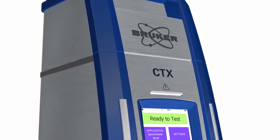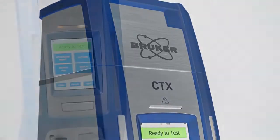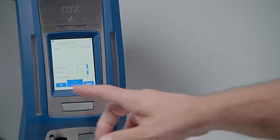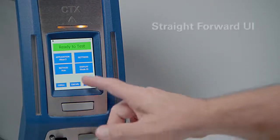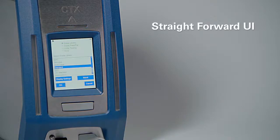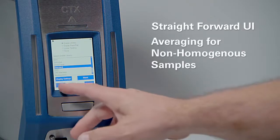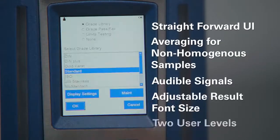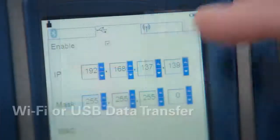The CTX has the same onboard software features as Bruker's proven S1 Titan, including a straightforward user interface, averaging for non-homogeneous samples and batch evaluation, audible signals, adjustable result font size, user levels, and Wi-Fi or USB data transfer.